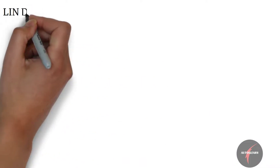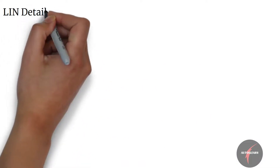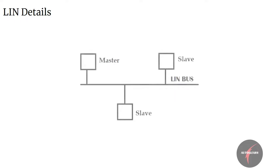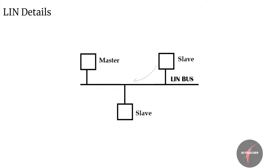Now let's understand LIN in a bit more detail. LIN is typically placed in a master-slave network. In a LIN network, the master node loops through each of the slave nodes by sending requests for information, and the slave node responds with data when the master polls them.